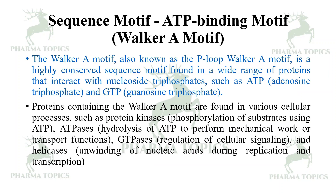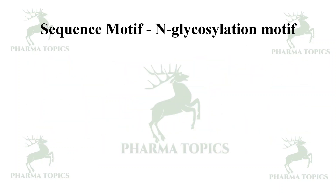The Walker A motif is also a P-loop motif — a highly conserved sequence motif found in a wide range of proteins that interact with ATP and GTP molecules. Proteins containing the Walker A motif are involved in various cellular processes such as protein kinases for phosphorylation, ATPases which hydrolyze ATP to perform mechanical work or transport functions, GTPases which regulate cellular signaling, and helicases which unwind nucleic acids during replication and transcription.